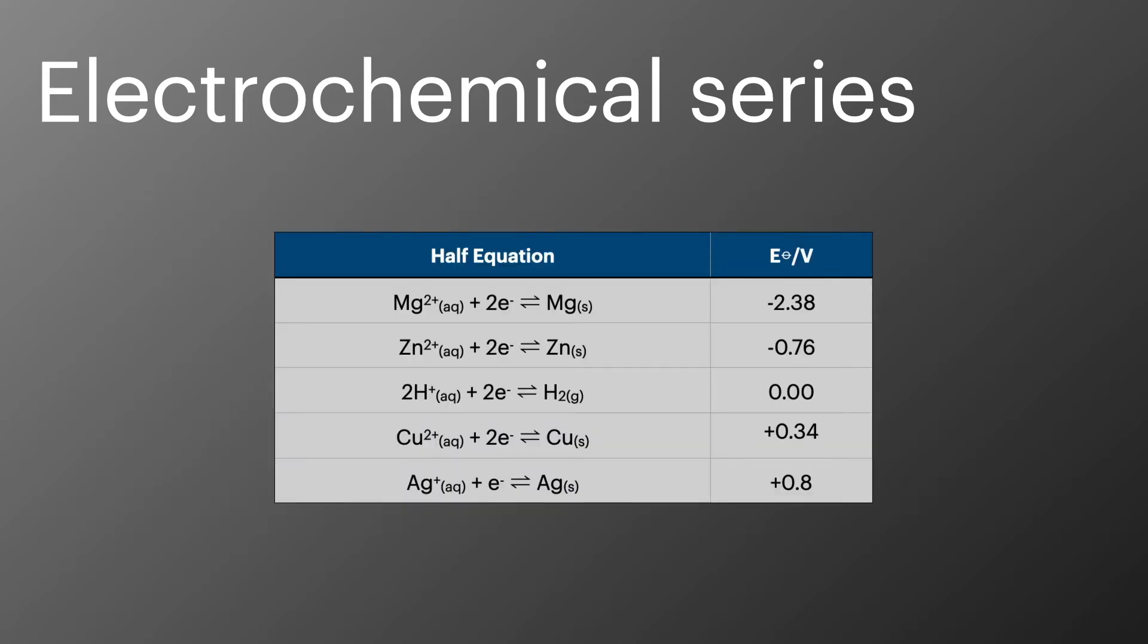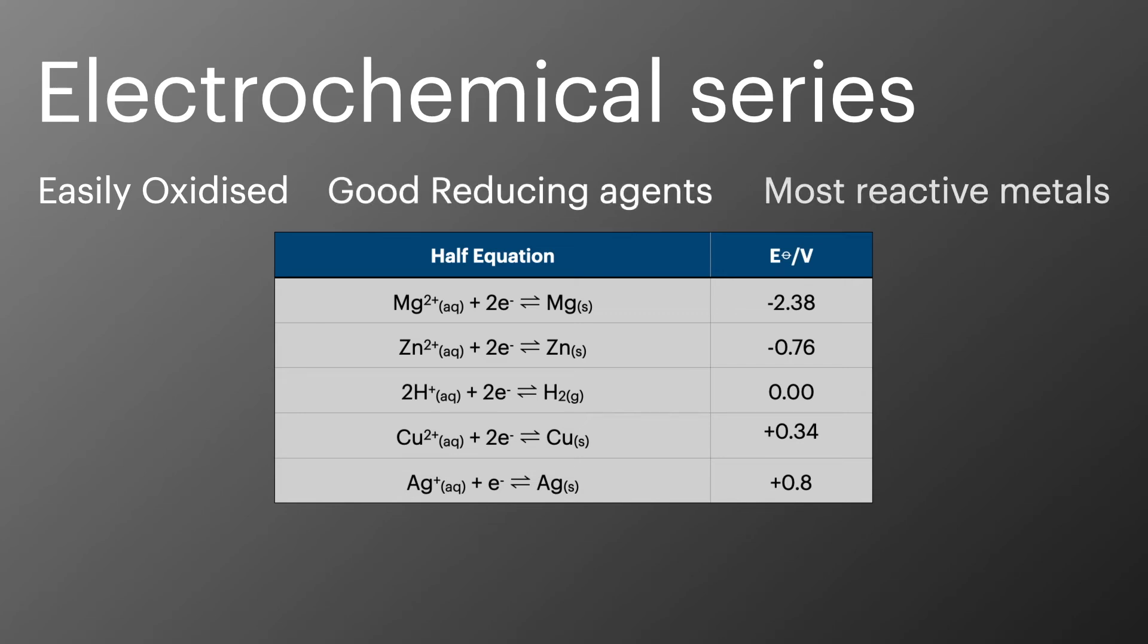So if we look at a small snapshot of electrochemical series, we've got the most negative values at the top and the most positive values at the bottom. The ones at the top are easily oxidized. And because of this, they make really good reducing agents. They also happen to be the most reactive metals. Now we know this because metals want to be ionized. So the more reactive the metal, the more likely they are to give up their electrons.